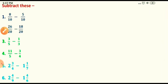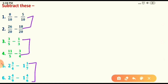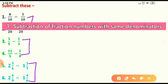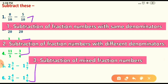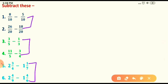Now we go to the second activity, based on paper and pen. I have taken 6 questions and these 6 questions are in pairs. The first 2 questions are similar, questions 3 and 4 are similar, and 5 and 6 are similar. Subtraction is divided into 3 parts: first, fractions with equal denominators; second, fractions with different denominators; and third, mixed fraction numbers.